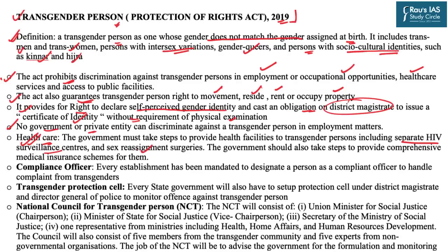The Act also provides various institutions and official mechanisms to protect the rights of transgender persons. It lays down the establishment of a compliance officer — every establishment has been mandated to designate a person as a complaint officer to handle complaints from transgenders. It also establishes a transgender protection cell, requiring every state government to set up a protection cell under the district magistrate. The Director General of Police will monitor offenses against transgender persons.